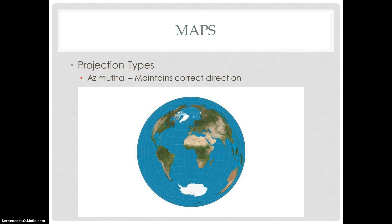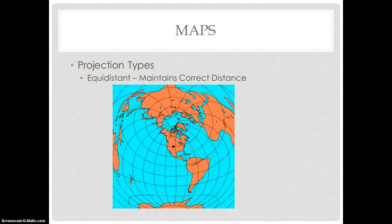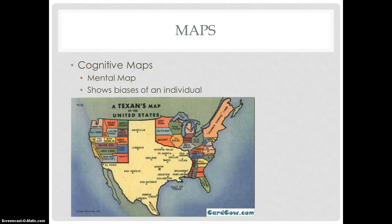The third projection type is azimuthal, which maintains correct direction. There are also equidistant maps, which maintain correct distance. And finally, there are cognitive maps, which are basically mental maps that show the biases of an individual. These can also contain propaganda maps.